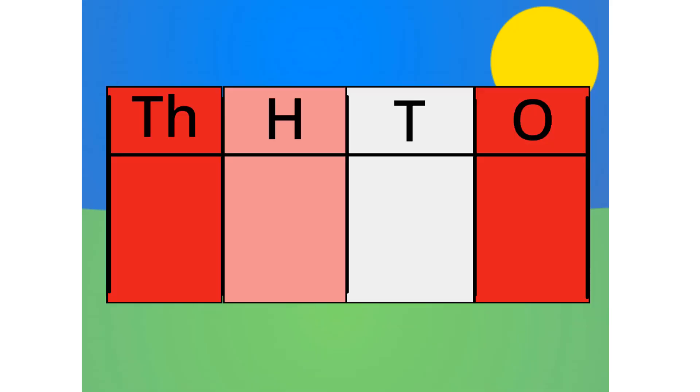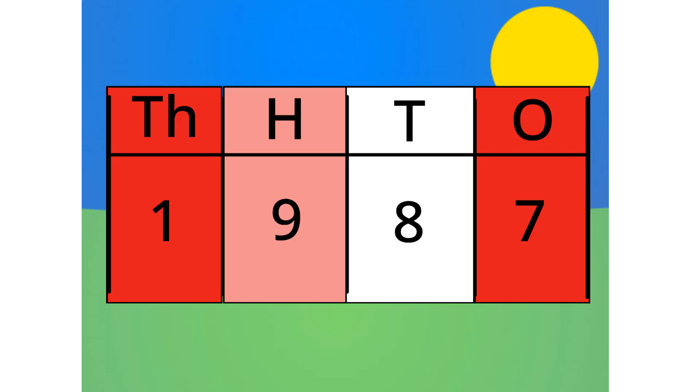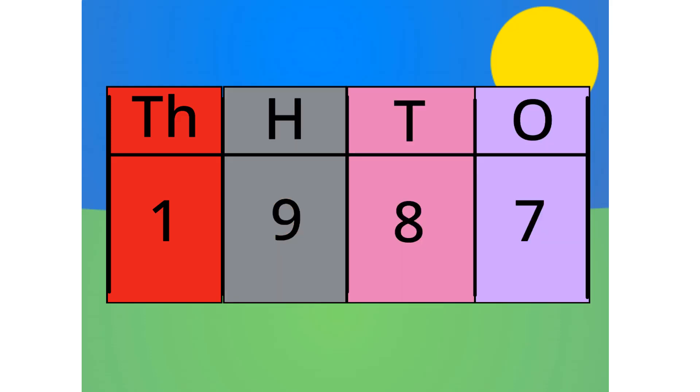First off, the number table. Let's do 1987 for example. Do you see anything that relates to this number? This number is made up of 1 thousand, 9 hundreds, 8 tens, and 7 ones. See?